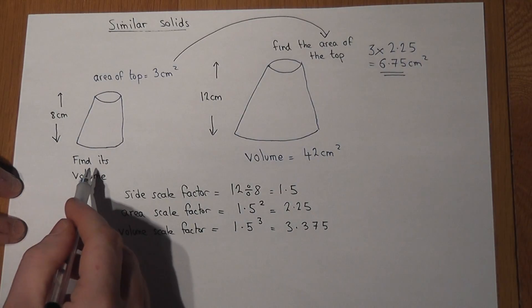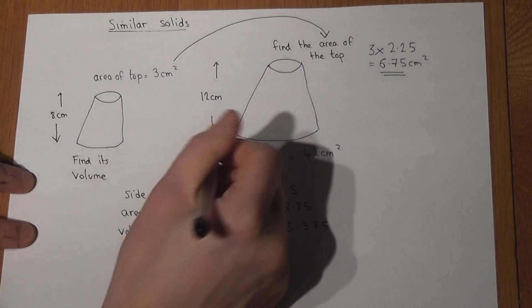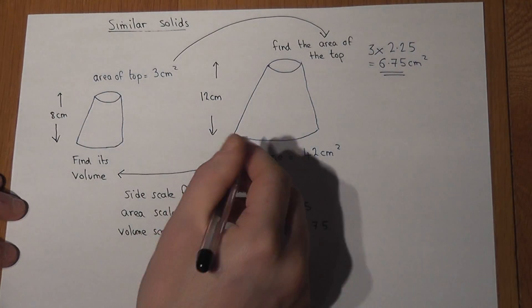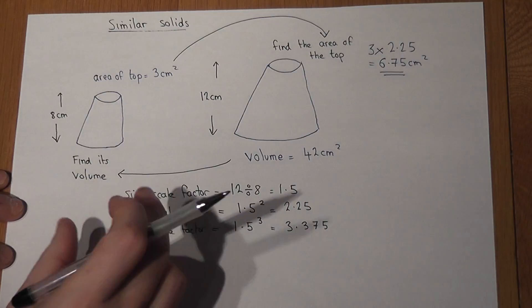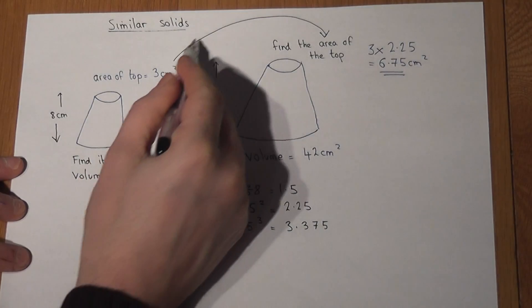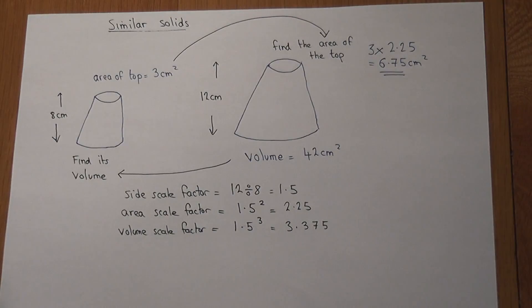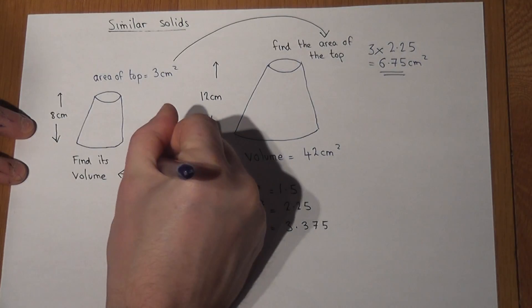Now to find the volume of the smaller shape, the problem now is we're going backwards - we're shrinking it down. So the only difference now is that rather than times by the scale factor, we divide by the scale factor.